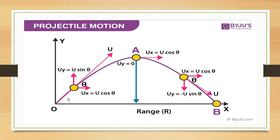Some of you can see the body at the instant — the body has 2 components: ux and uy. ux and uy are the horizontal and vertical components. The ux component is constant — the horizontal component will have no effect of gravity.